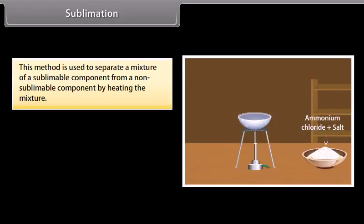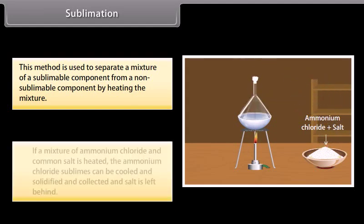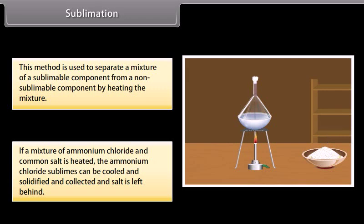Sublimation. This method is used to separate a mixture of sublimable component from a non-sublimable component by heating the mixture. If a mixture of ammonium chloride and common salt is heated, the ammonium chloride sublimes, can be cooled and solidified and collected, and salt is left behind.